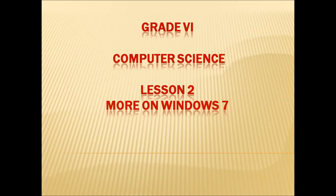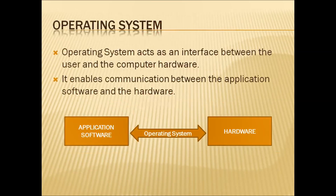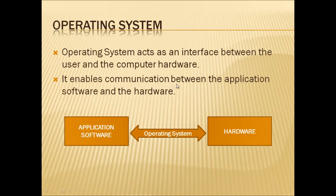Lesson 2: More on Windows 7. Basically, Windows 7 is one of the commonly used operating systems. Now we will see what is an operating system. An operating system acts as an interface between the user and the computer hardware — like a middleman between us (the users) and the computer hardware. It enables communication between the application software and the hardware.